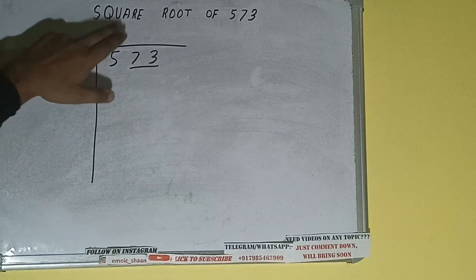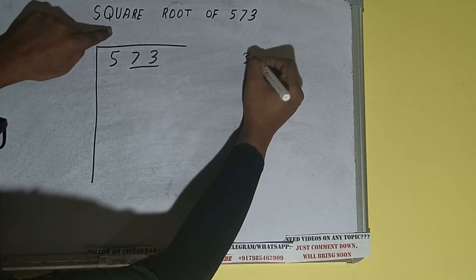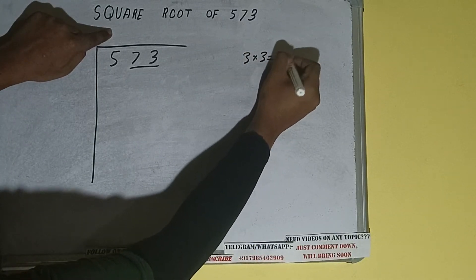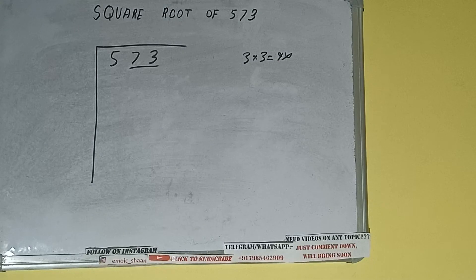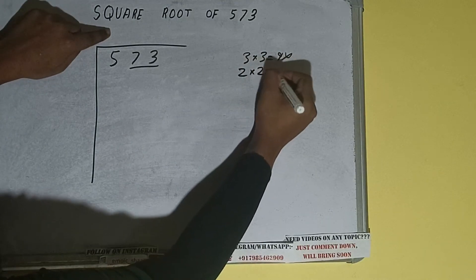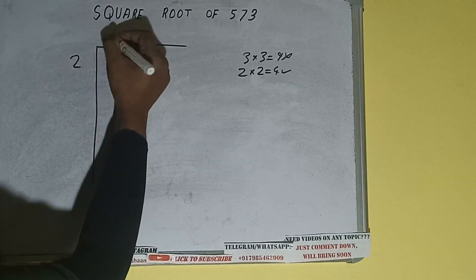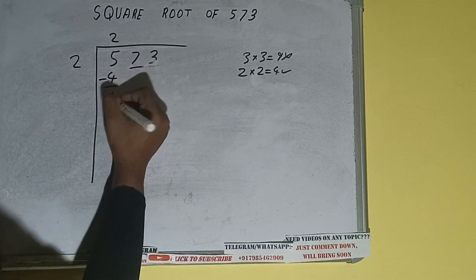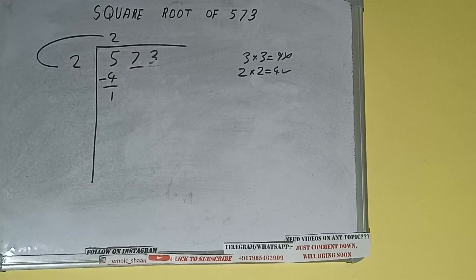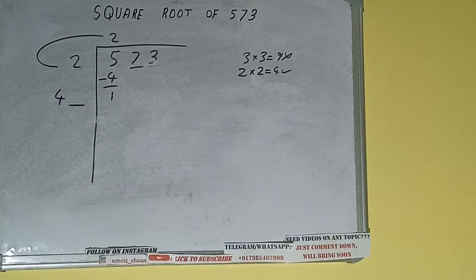The rule is whatever number we write here, we have to write here also. So if we write 3 here and 3 here, it will be 9 which is greater than 5, so we cannot use it. If we write 2 here and 2 here, it will be 4 which is good. So 2 here and 2 here, 4 subtract, 1 will be left. We did 2 into 2, so add both. 2 plus 2 will be 4. Write it here and keep a digit extra. And this number we need to make it big.